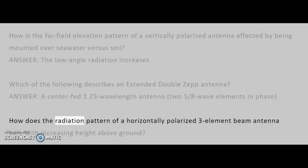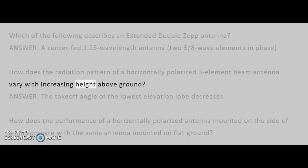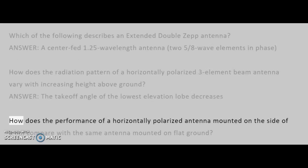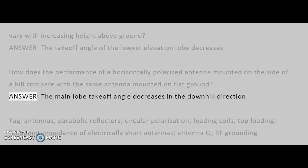How is the far-field elevation pattern of a vertically polarized antenna affected by being mounted over seawater versus soil? Answer: the low-angle radiation increases. How does the radiation pattern of a horizontally polarized three-element beam antenna vary with increasing height above ground? Answer: the takeoff angle of the lowest elevation lobe decreases. How does the performance of a horizontally polarized antenna mounted on the side of a hill compare with the same antenna mounted on flat ground? Answer: the main lobe takeoff angle decreases in the downhill direction.